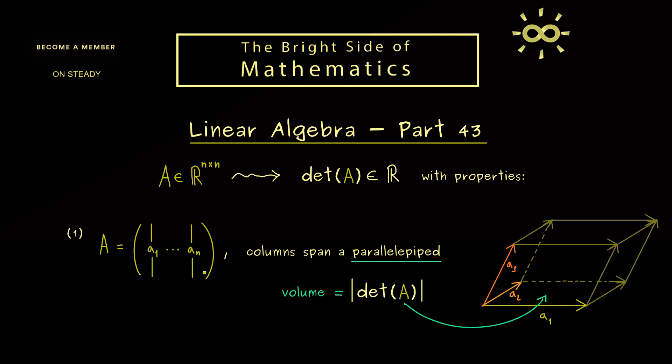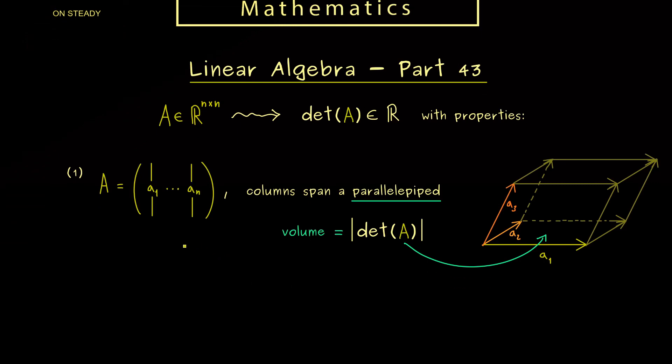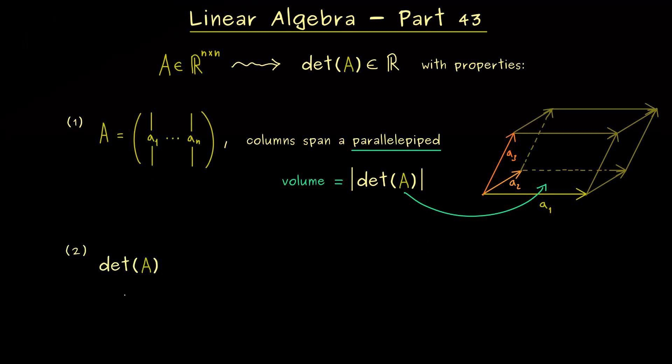Okay, having this in mind, we can immediately explain the second property. This is something we want to use in the case that we know that the determinant is equal to zero. In other words, the volume the vectors span here vanishes.